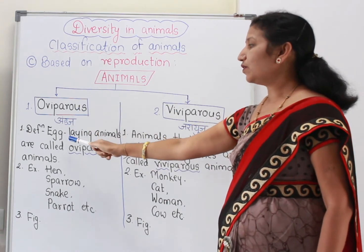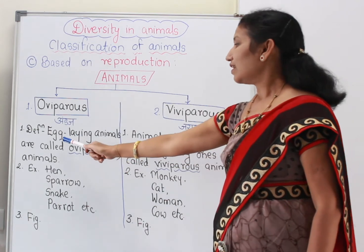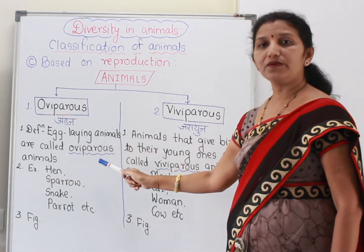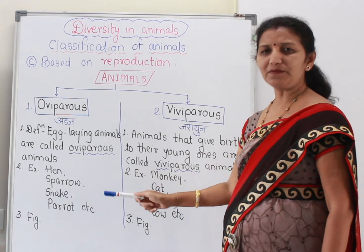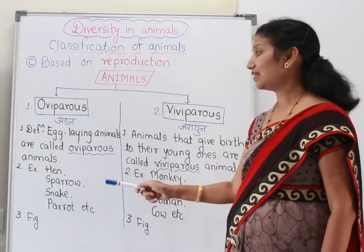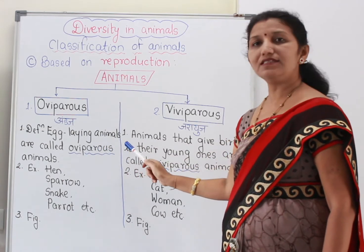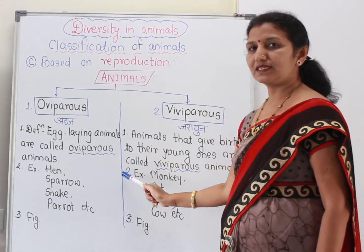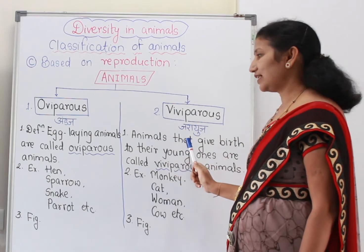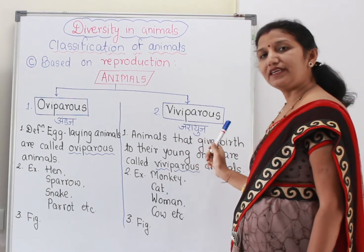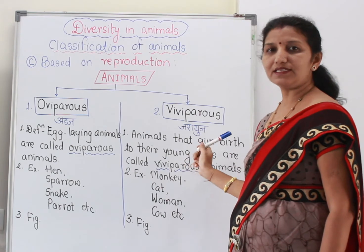Now oviparous animals are defined like this: egg-laying animals are called oviparous animals. And viviparous animals — animals that give birth to their young ones are called viviparous animals.